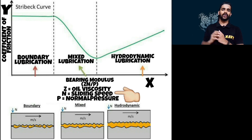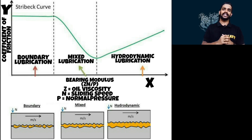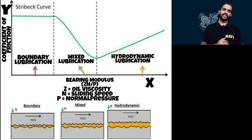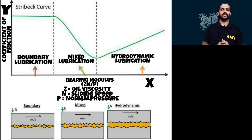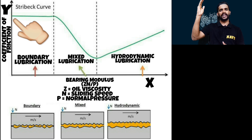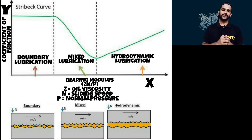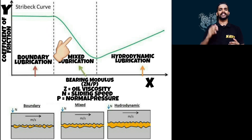Let's analyze the sliding speed N from the bearing modulus. When the piston is at TDC and BDC, the sliding speed N will be zero. So at TDC and BDC there will be no oil film, and the coefficient of friction will be very high. This is quite visible from the graph as well — when the speed is zero, the coefficient of friction will be very high. As the sliding speed N increases, the oil film starts to build up, and you can see from the graph that the coefficient of friction keeps on reducing. Speed and coefficient of friction are indirectly proportional to each other.